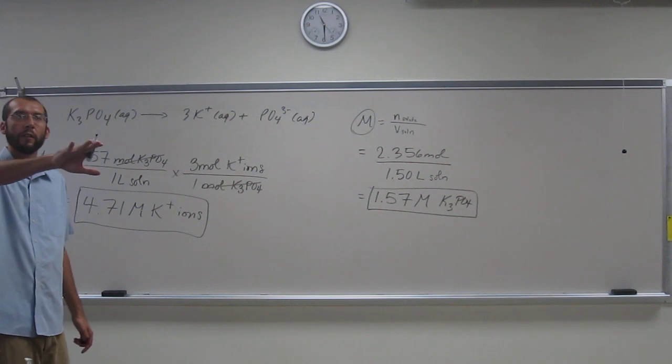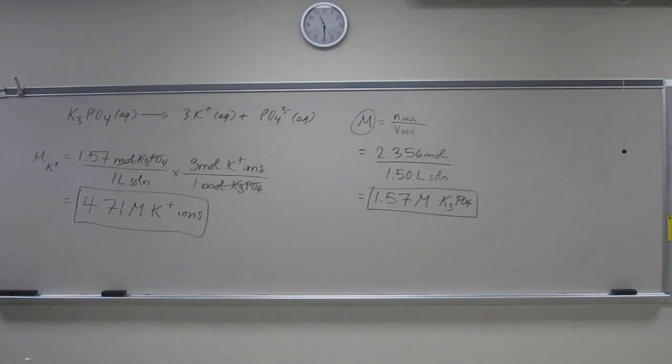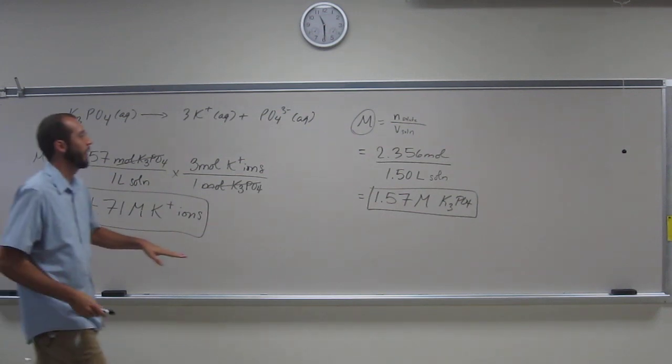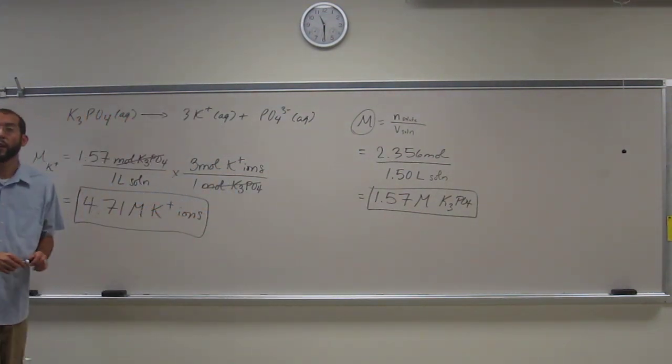OK, back there. OK, cool. What if I asked you, I guess, just to continue this problem a little bit, what's the molarity of phosphate ions in this? 1.57. 1.57.